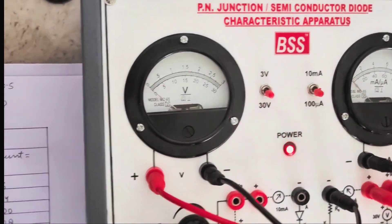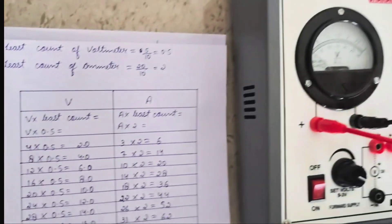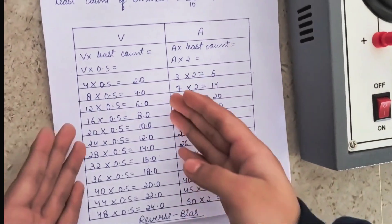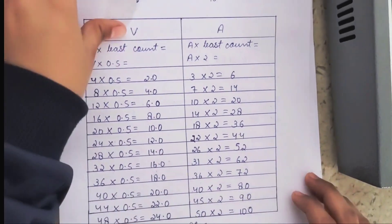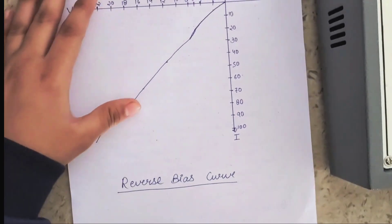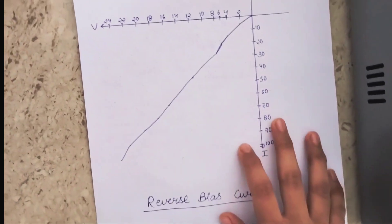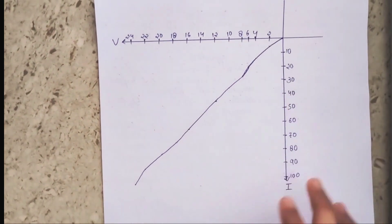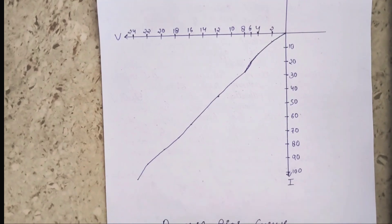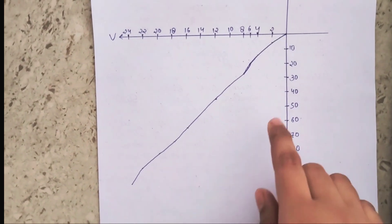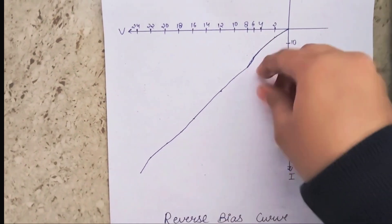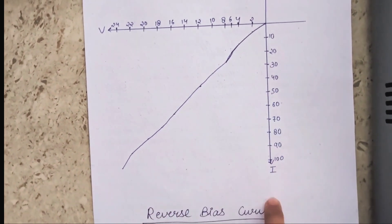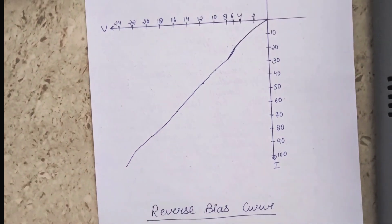We will write all the values from this voltmeter as well as from this ammeter in this section. After getting a series of values we will plot all these values on a graph paper — we prefer a graph paper over a white sheet for plotting the values. We will get a curved shape, and this voltage will be called the breakdown voltage, because after this voltage our current starts moving at a faster rate.